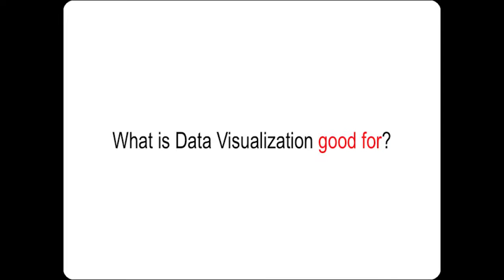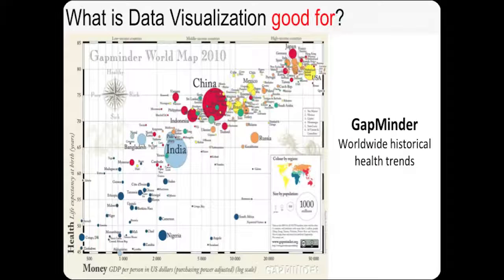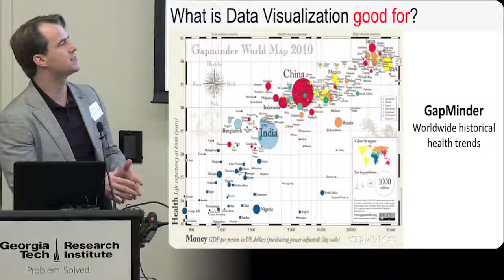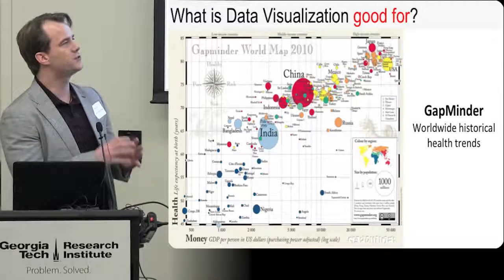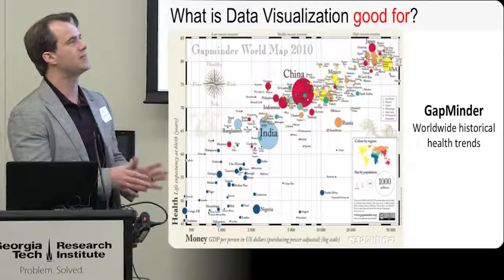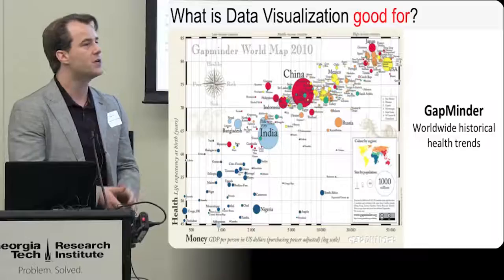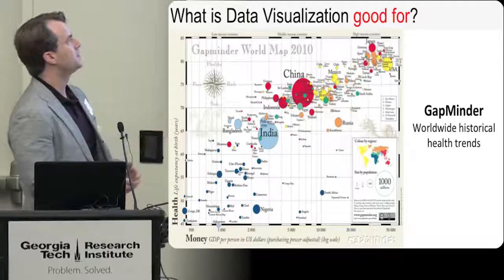We've talked about what data visualization is and is not — but let's focus on what it's good for. One of the things data visualization is really good for is presenting information or telling a story to someone else. This is Gapminder — a really great example of a tool that lets you analyze historical health trends. This representation is a fairly familiar scatter plot. Along the y-axis, we have health or life expectancy at birth.